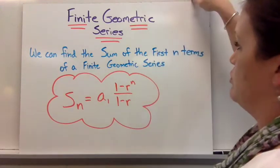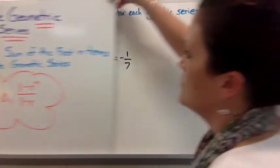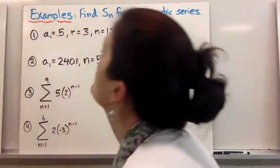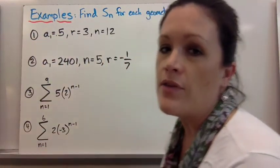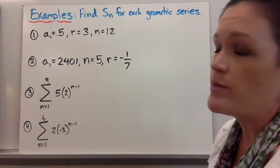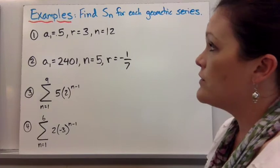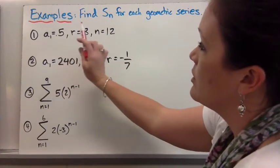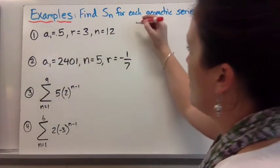Let's look at some examples. So they can write it a couple of different ways. Like they might just give you the information in a list. So number 1 and 2 give you the information that way. So they gave us the first term, the r, and the n value.